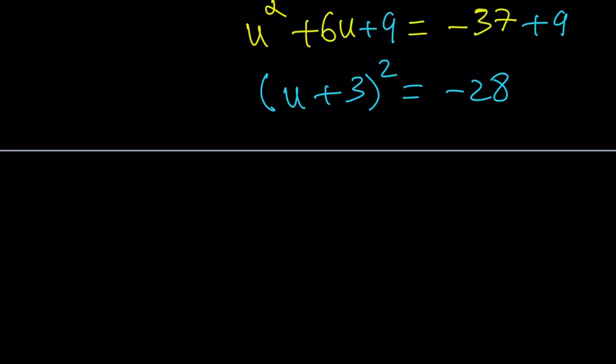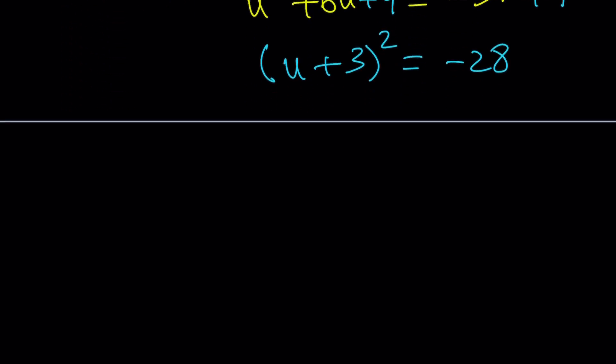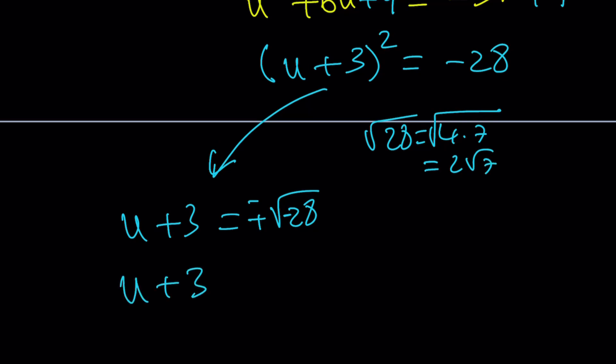u equals 6, let's save it for now. And let's focus on this. If you square root both sides, you're going to get the square root of 28 with a plus-minus sign. That's negative 28, by the way. And if you think about square root of 28, 28 is 4 times 7. So if you square root it, that's going to be 2 root 7. Nice. Then we can write this as u plus 3 equals plus-minus 2 root 7i, because we have a minus sign inside.